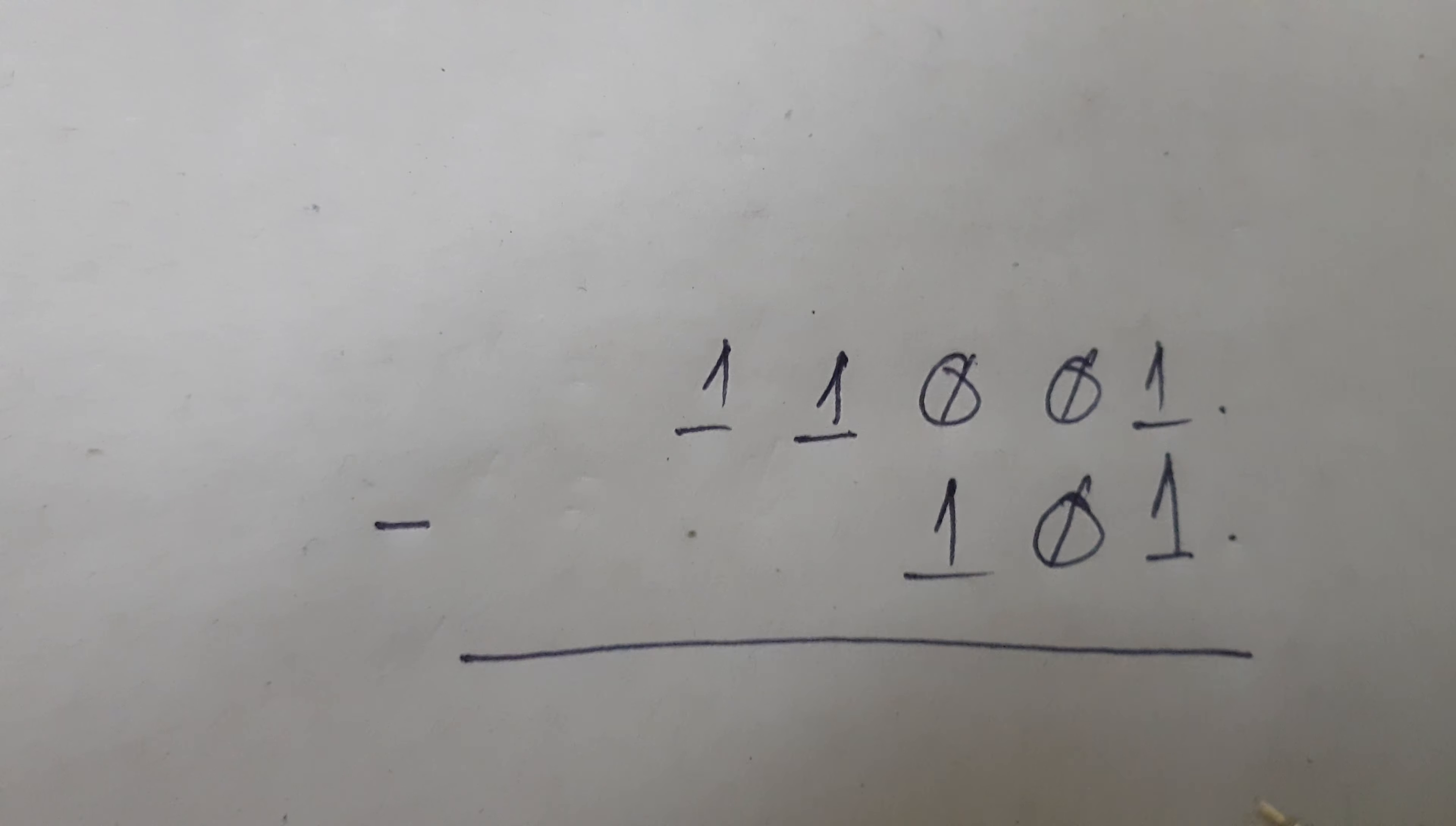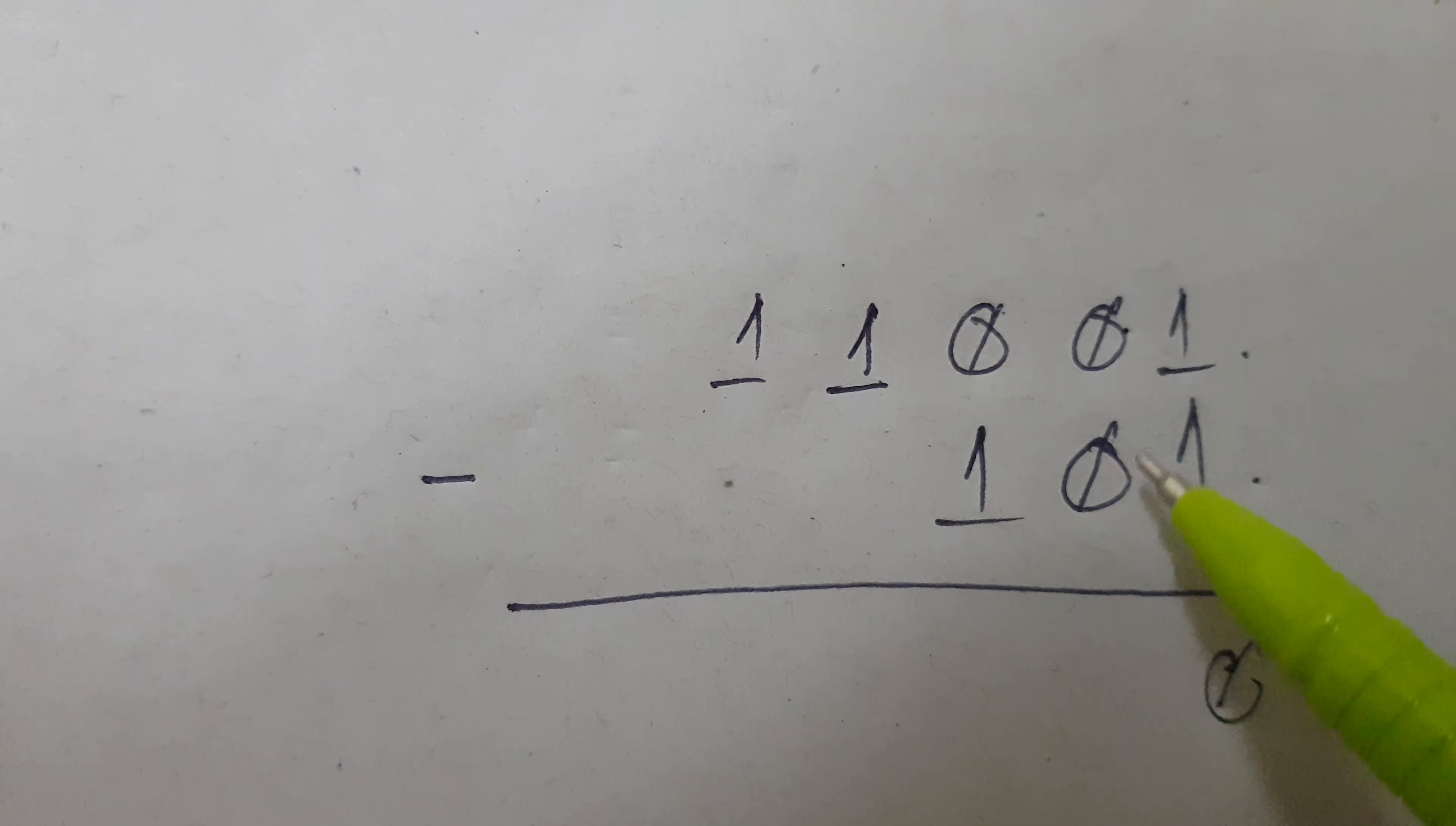So 1 and 1 is equals to 0. 0 and 0 is equals to 0.